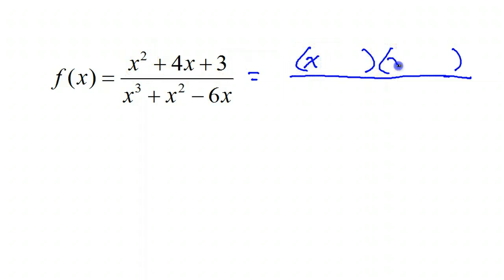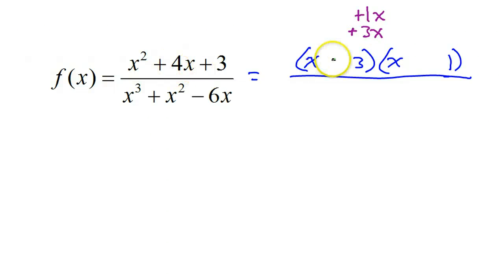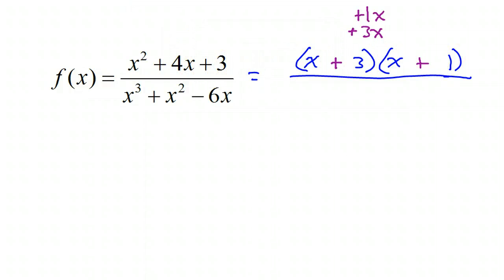x squared would only factor as x times x. Three can only be three times one. Inner plus outer has to equal middle. Inner I have three x, outer I have one x — I'm trying to get a middle of four x. That'll happen naturally if I let both of these be positive, that'll make positive four. You always have to check and make sure you're getting the positive three. Positive times a positive is positive, so this is the correct factorization.